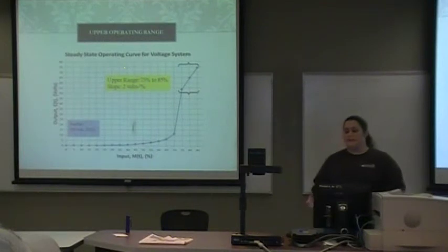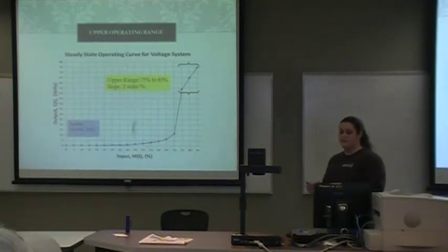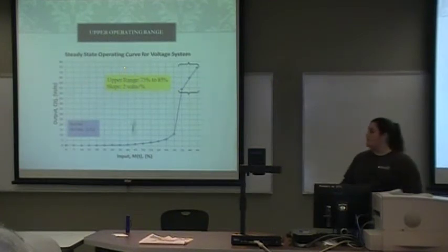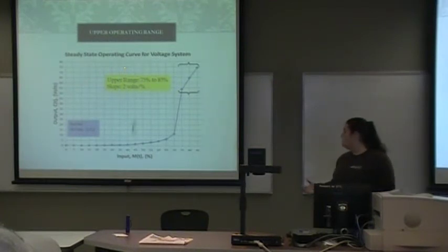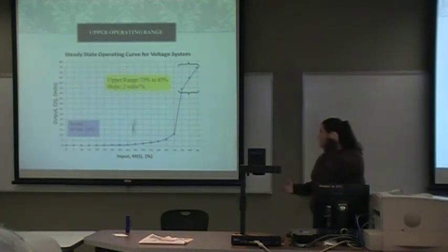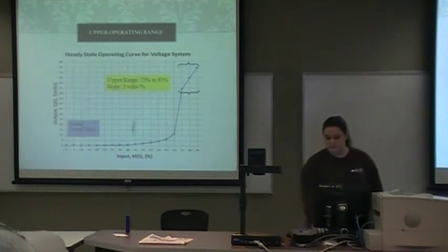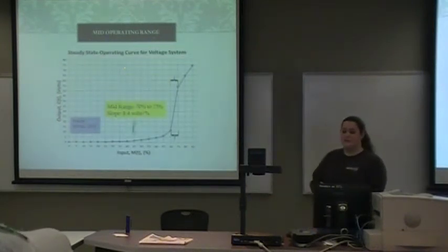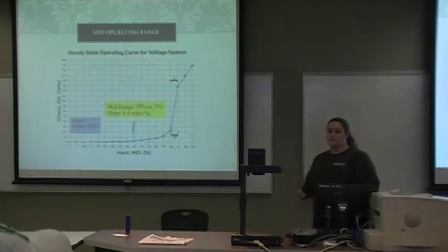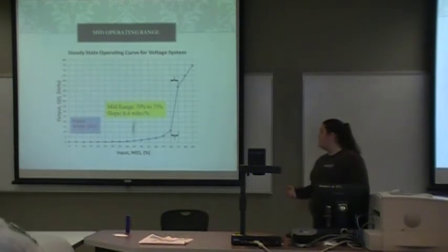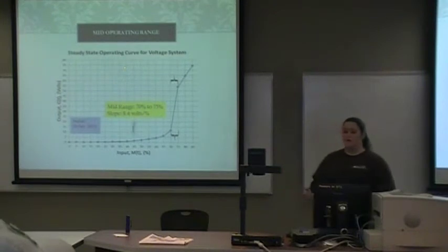This is the upper range for our system. In this range it's linear, from 75 to 85 volts, and the slope is 2 volts per percent input. The mid-range is 70 to 75 volts, and the slope of this region is 8.4 volts per percent input.